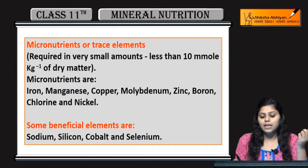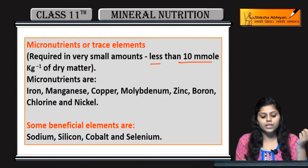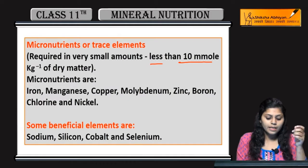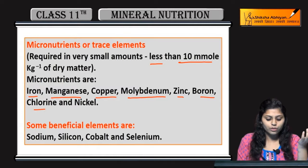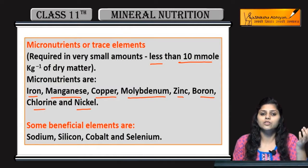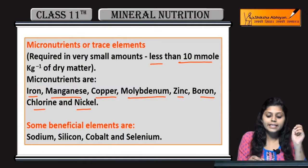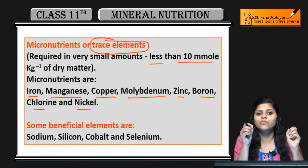Micronutrients are present in less than 10 millimole per kg inverse of dry matter. Examples of micronutrients are: iron, manganese, copper, molybdenum, zinc, boron, chlorine, and nickel. These are called trace elements because they are present in very small amounts.